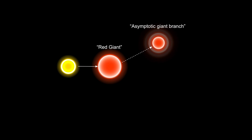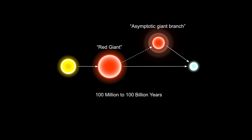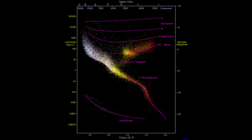They also have this really fancy name called the asymptotic giant branch, which is when the star's mass is not enough to burn helium — they go into this stage. Either way, they both turn into a white dwarf. They generally live from 100 million to 100 billion years, and yeah, this is kind of the most common type of ending that most stars we see in the night sky will be.